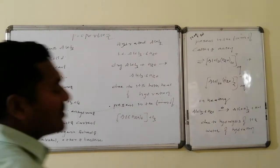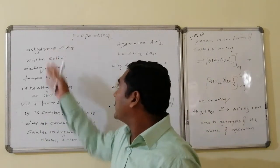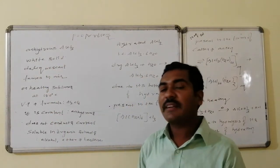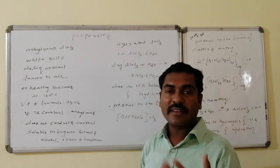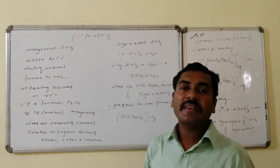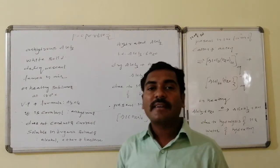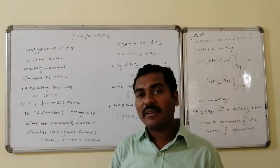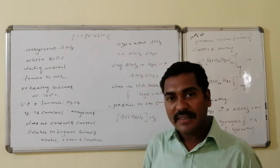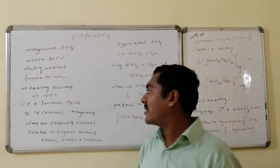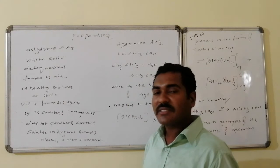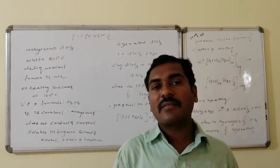Properties of aluminium chloride: anhydrous AlCl₃ is a white colored solid and is deliquescent in nature — it readily absorbs water molecules from the atmosphere and fumes in air. On heating, it sublimes at 180°C. Vapor density measurements reveal it is not a monomer but exists as a dimer Al₂Cl₆. It is covalent in nature, does not conduct electricity, and is soluble in organic solvents like alcohol, ether, and benzene.